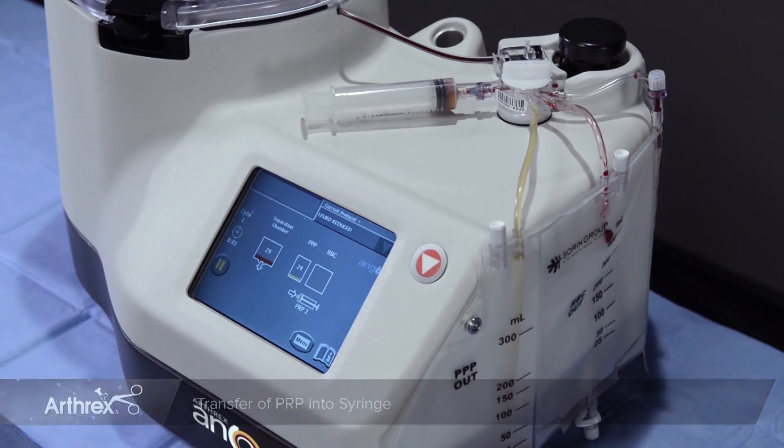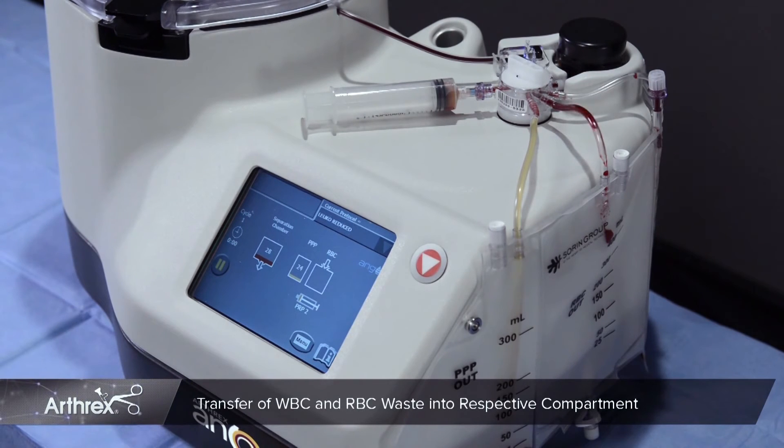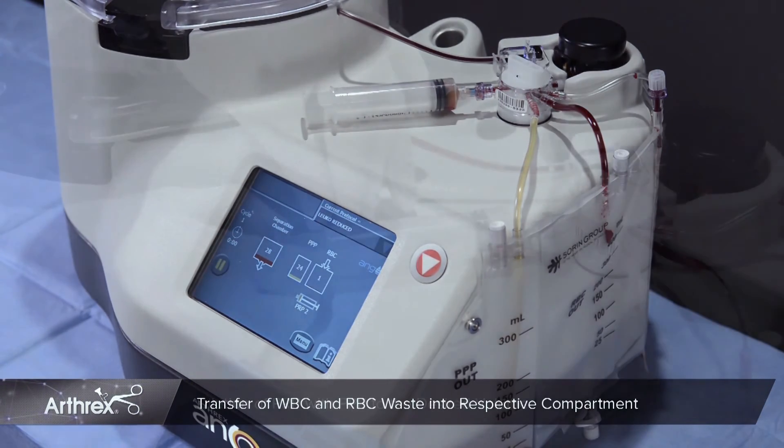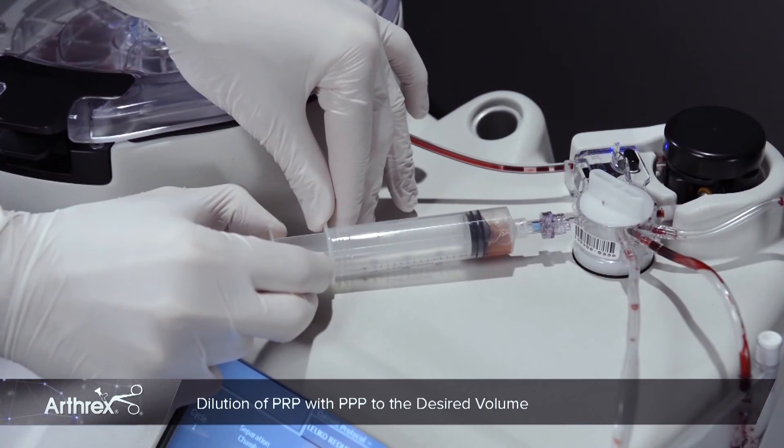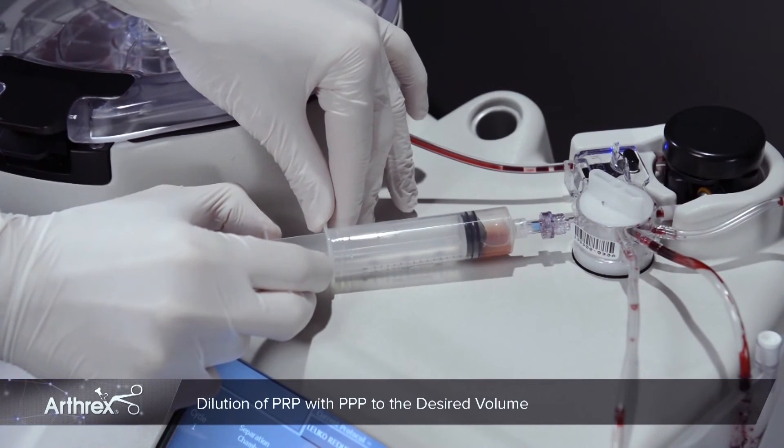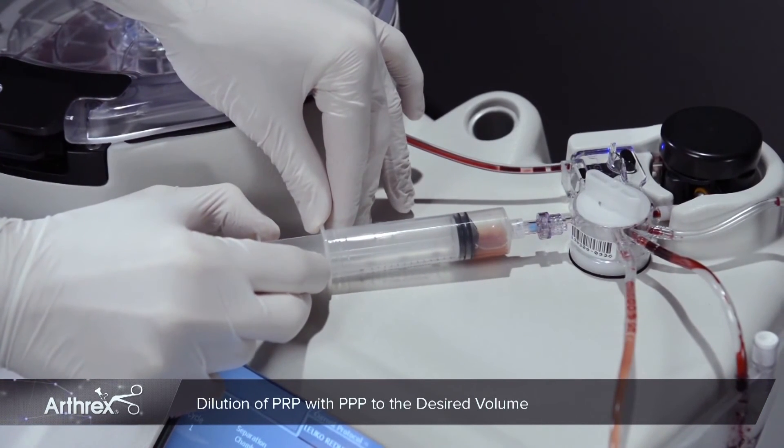If a concentrated PRP is desired, the PRP syringe may be disconnected. To increase the volume of the PRP syringe by diluting with PPP, simply pull back on the syringe plunger.